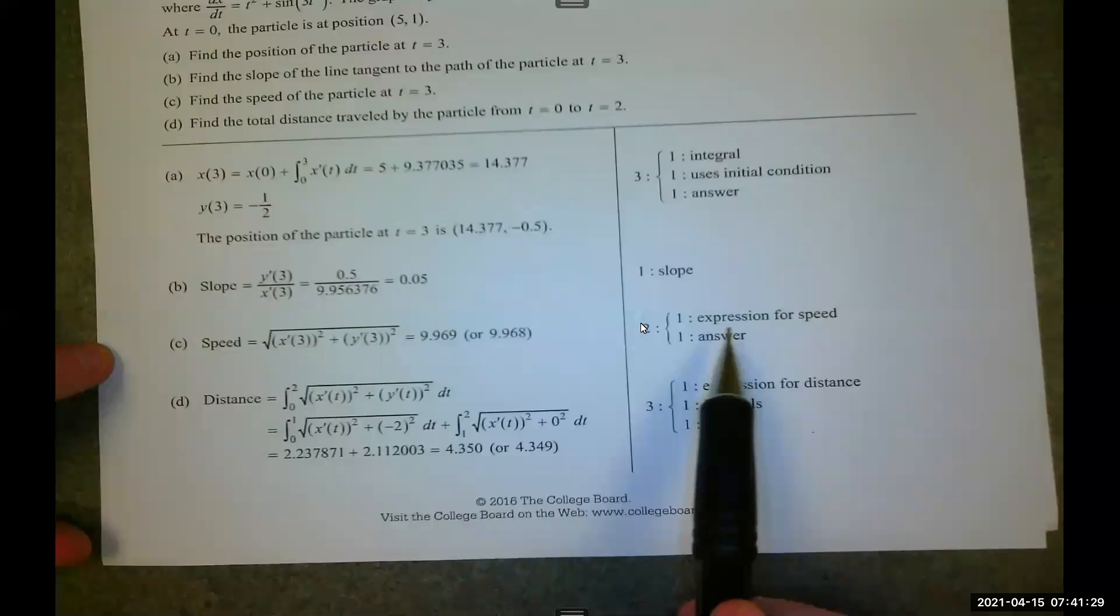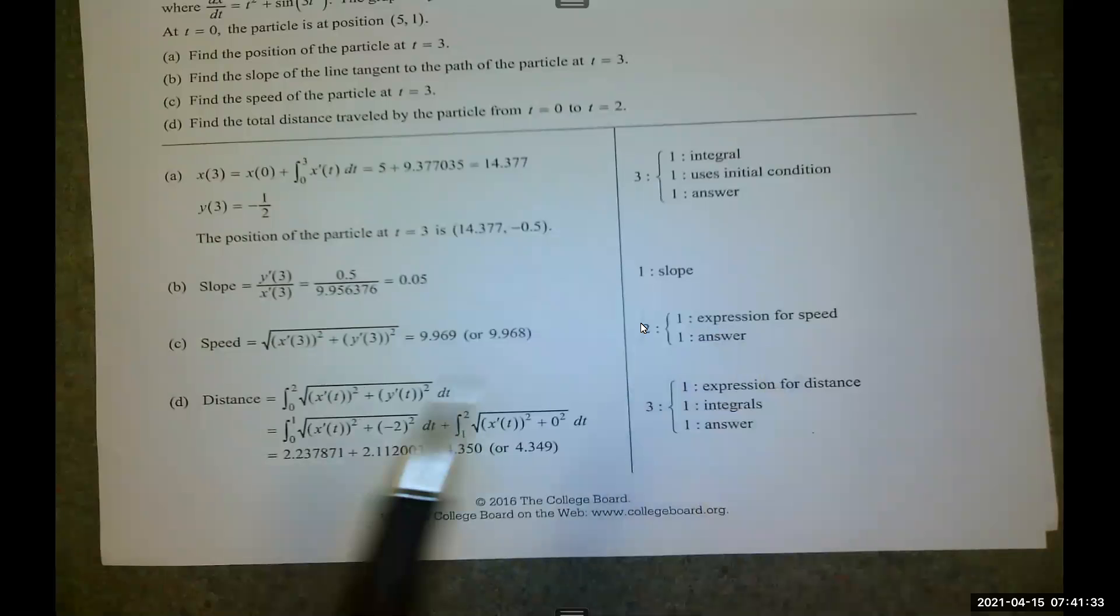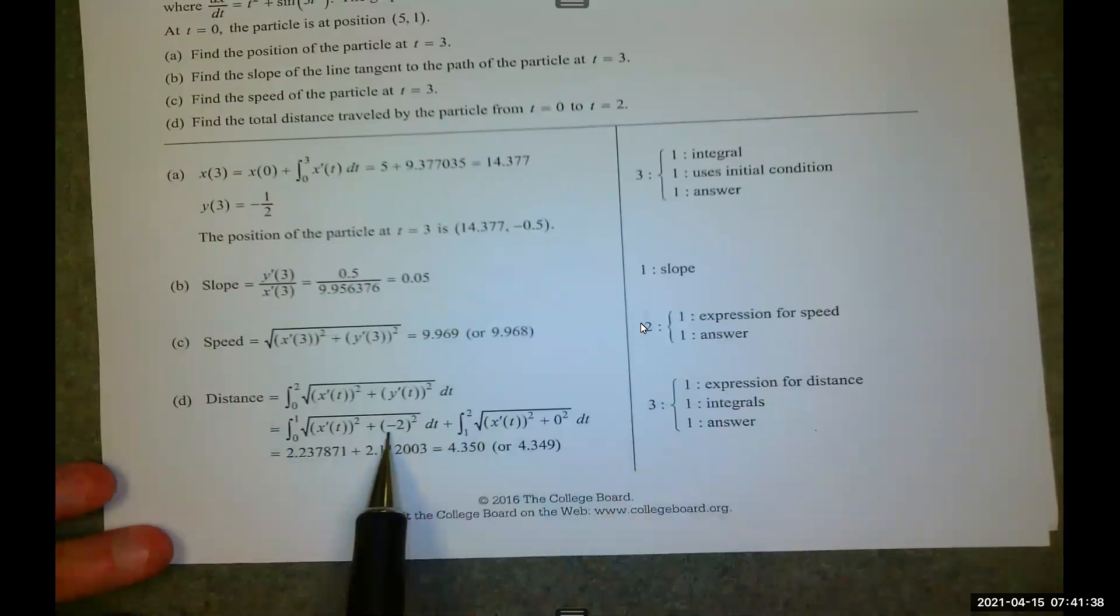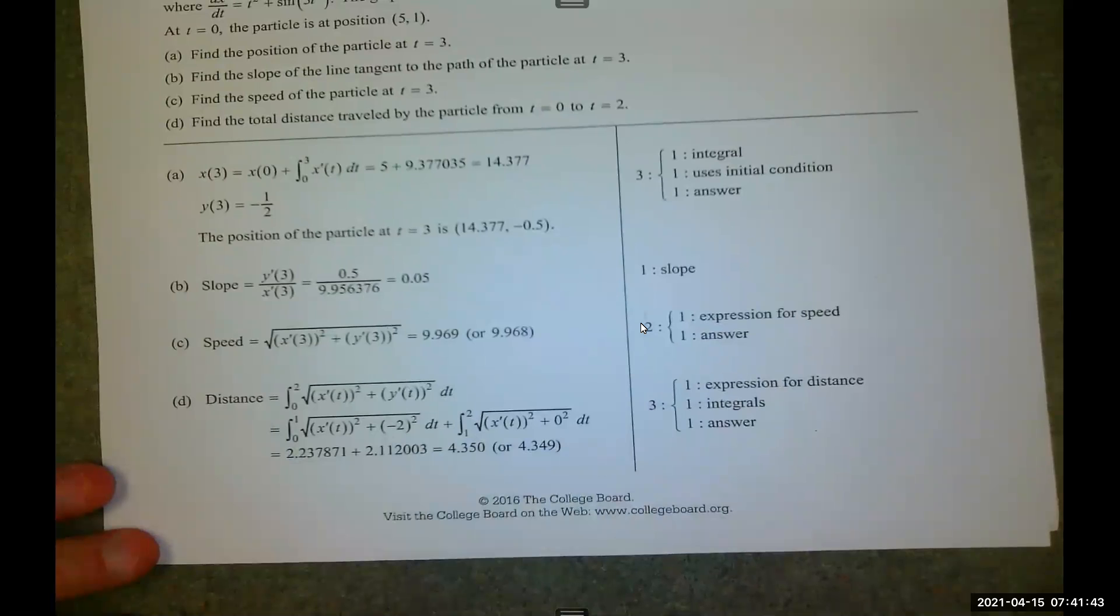For part c, we need the expression for speed. And if I have the correct expression for speed, I'm eligible for the answer point. And then the distance, very similar to what I did. They just wrote in the two different values for dy/dt, which I did not write in.